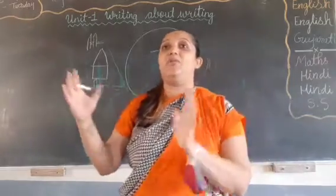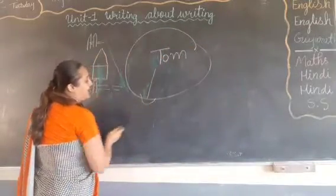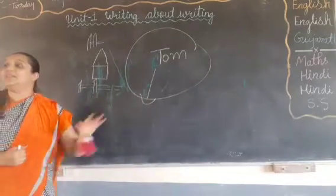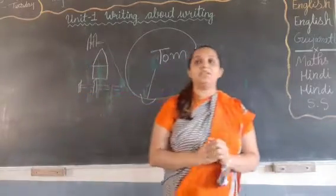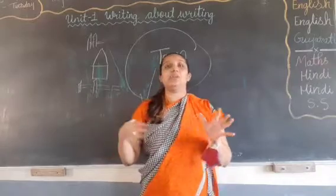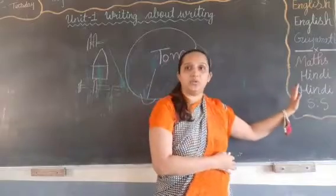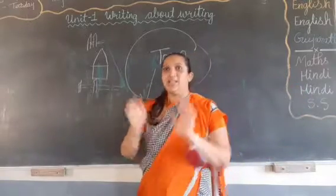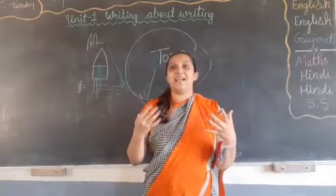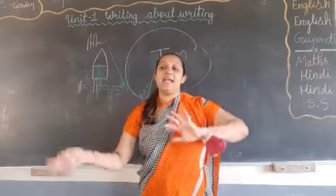The very first character Tom approached was Jim, who worked at Aunt Polly's house as a caretaker. Jim's usual job was to go to the river and fetch water. Tom thought this was easy, so he decided to persuade Jim — 'you do my painting and I'll go fetch the water instead.'